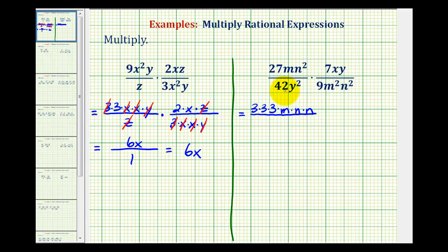Forty-two is equal to six times seven, and six is equal to two times three, so we'll have two times three times seven. Y² would be two factors of y.